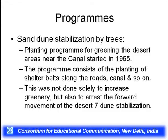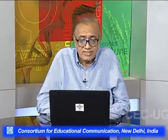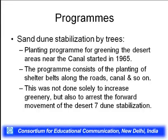Sand dune stabilization programs were initiated through tree and shelter belt plantation along railway lines, canals, roads, and surrounding villages. A variety of shelter belt programs were started in 1965 under the green area and Aravalli development program. The program consists of planting shelter belts not only to increase greenery but also to arrest the forward movement of the desert. Through this process, the expansion of the desert is being stabilized.